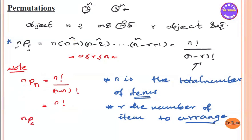Combination is related to permutation. Permutations are arrangements in a sequence or order.